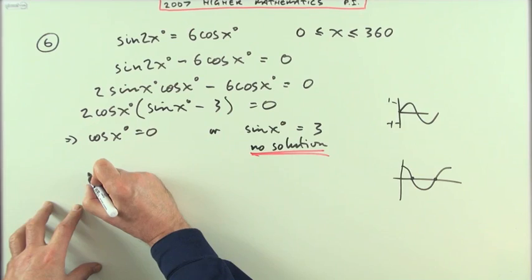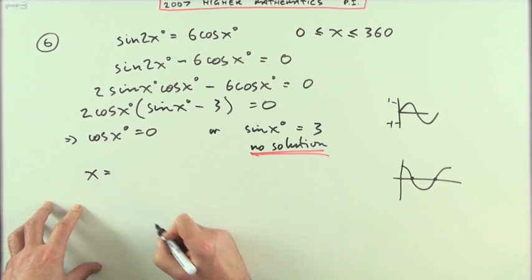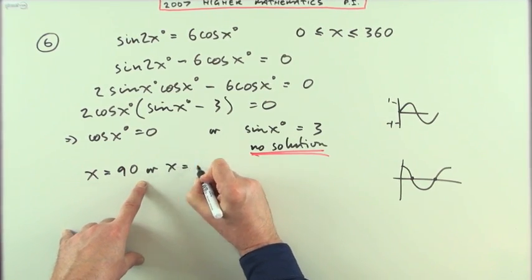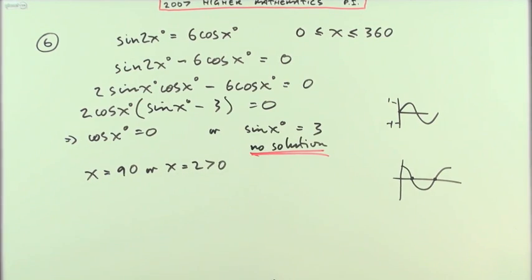So my final answer is x equals 90 or x equals 270. Now strictly speaking, I don't put any degree signs in.